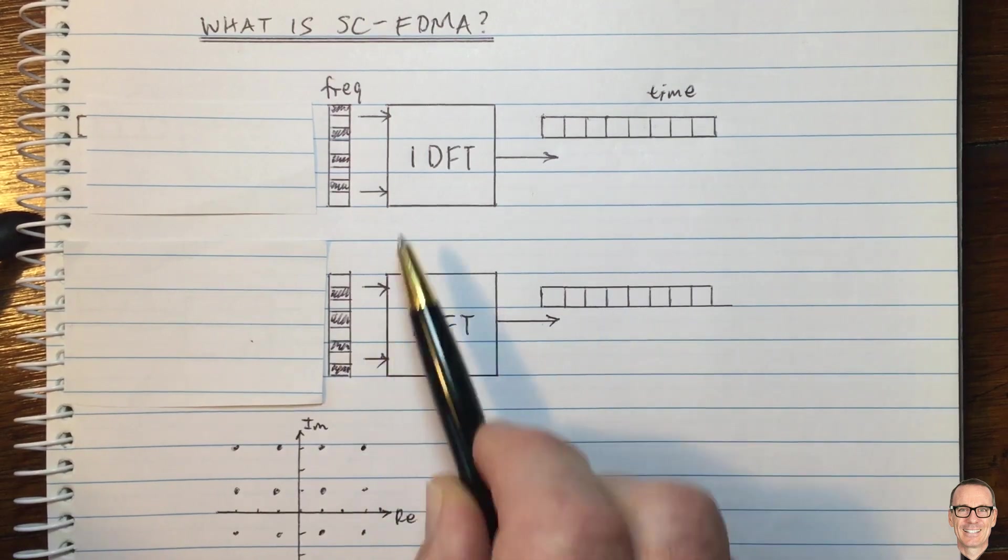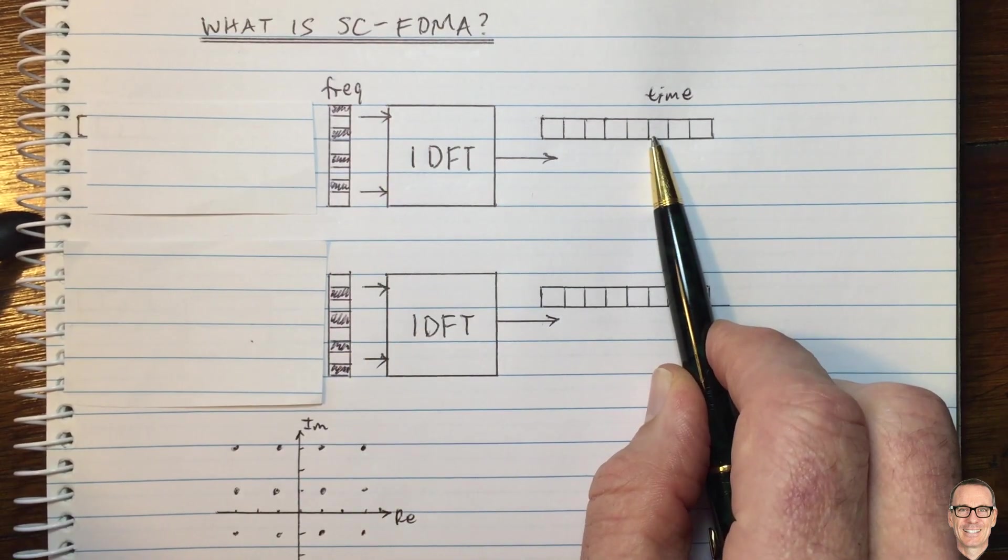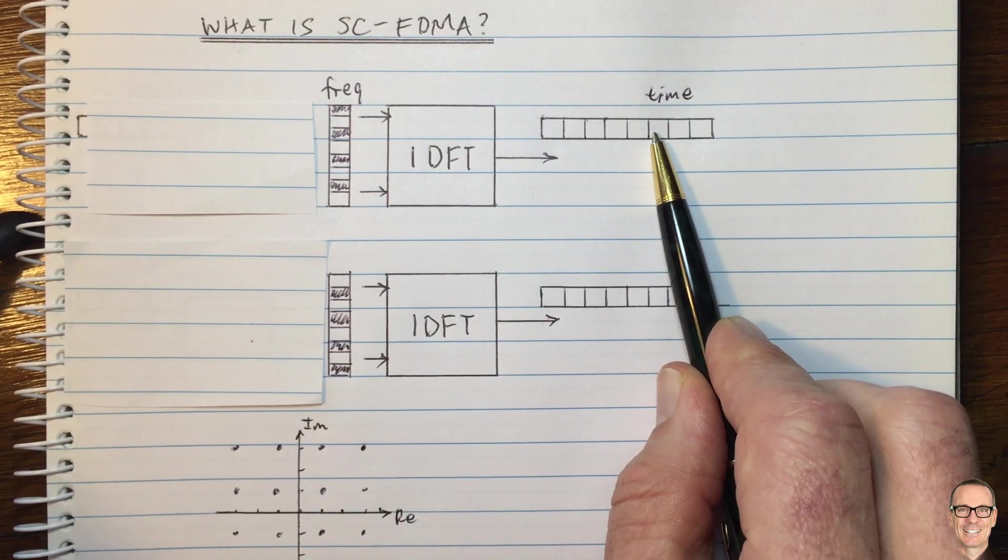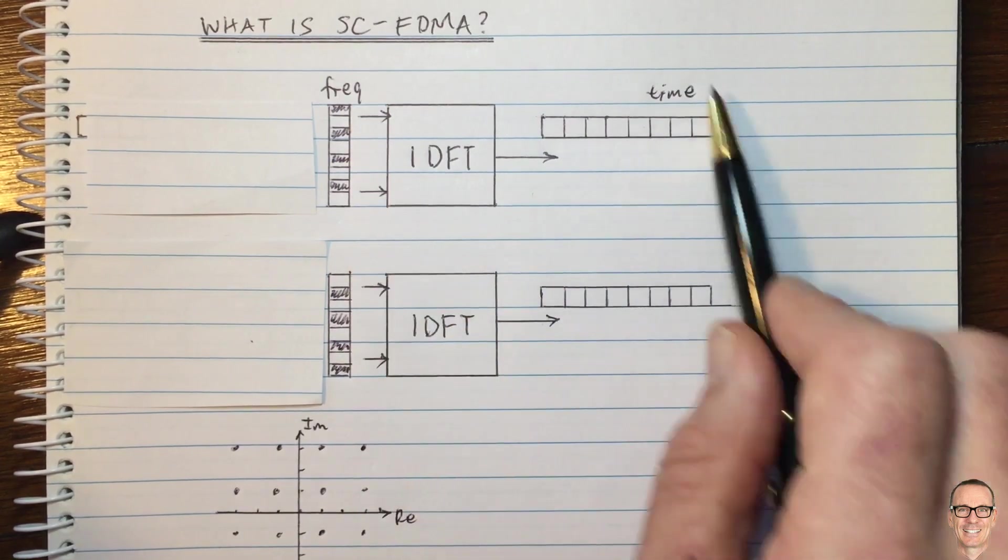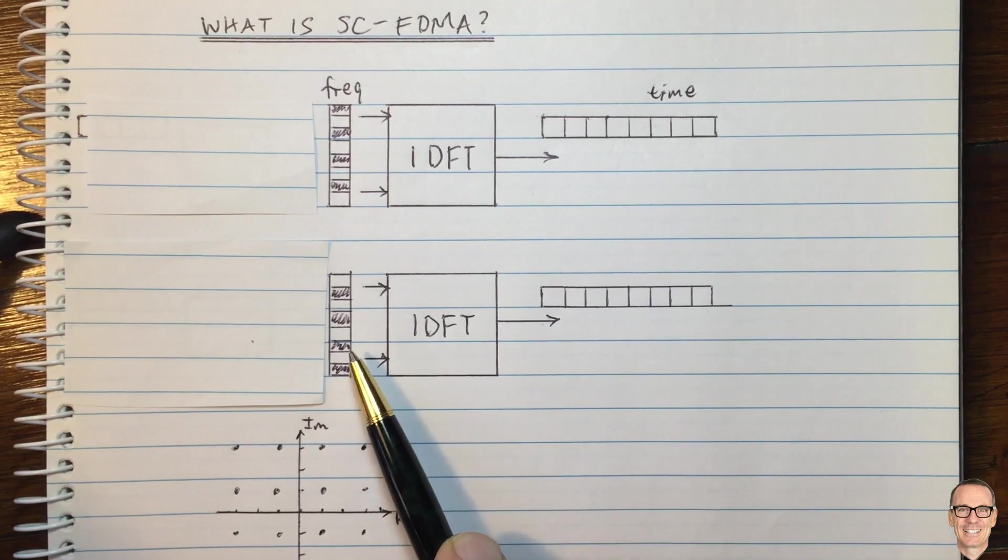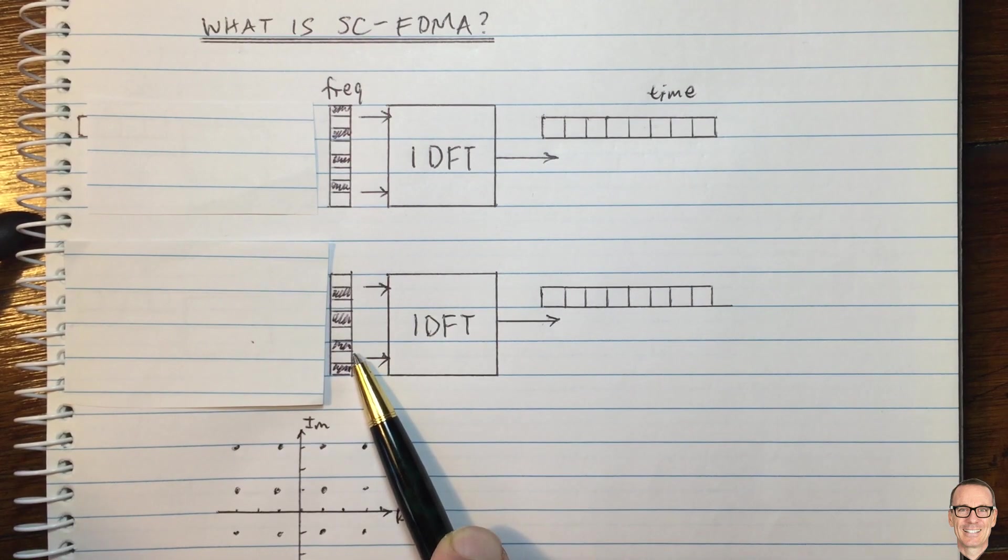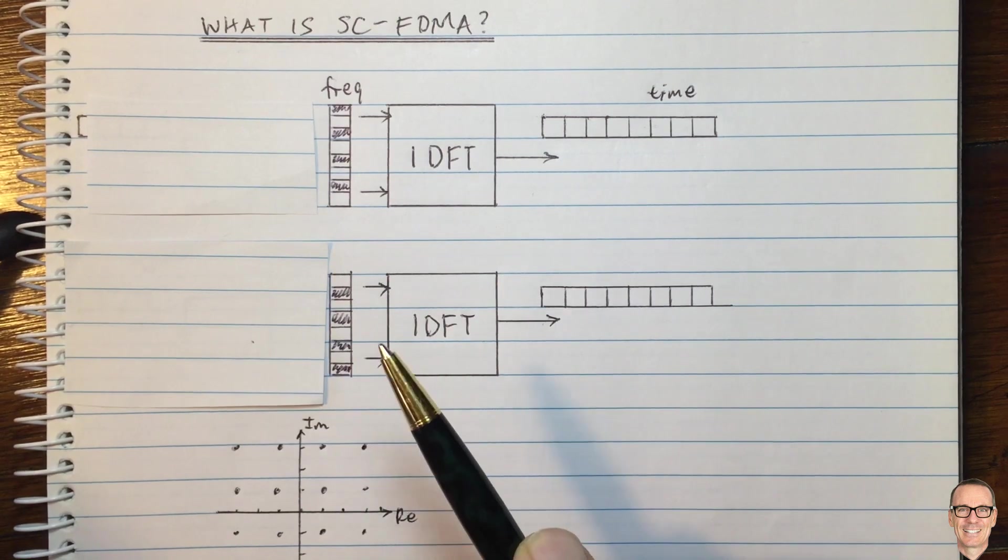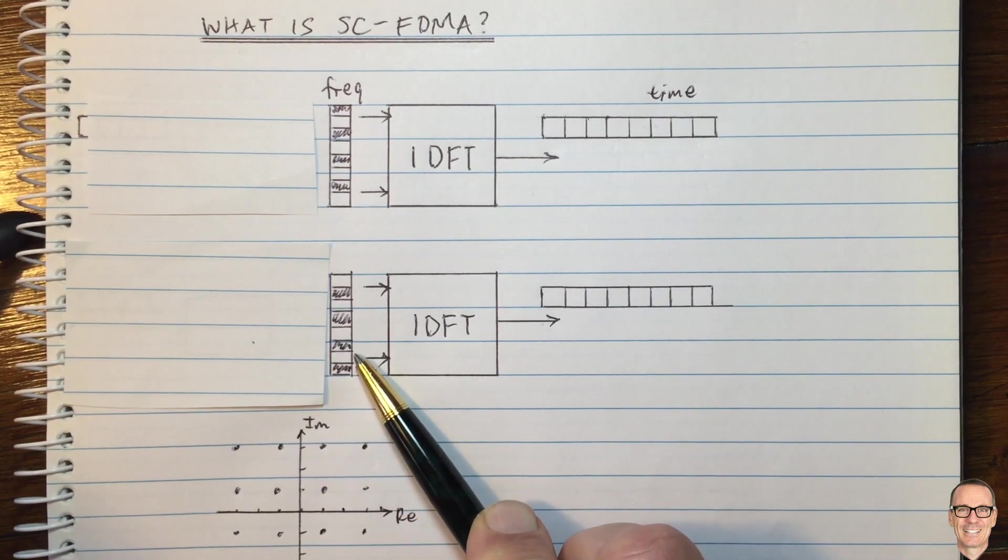Now each of these users is still going to have the problem of having high peak to average ratio unless they do something about it. Now they don't want to do that other process I talked about because it's computationally intensive at the transmitter. And on the uplink, the transmitter is a handset with a small battery and low limited computational power.